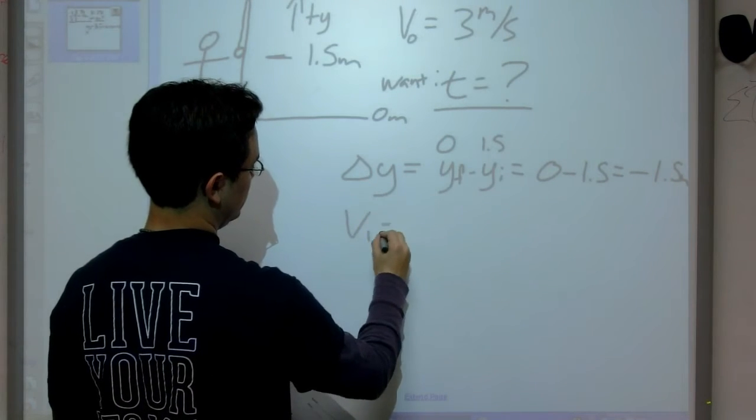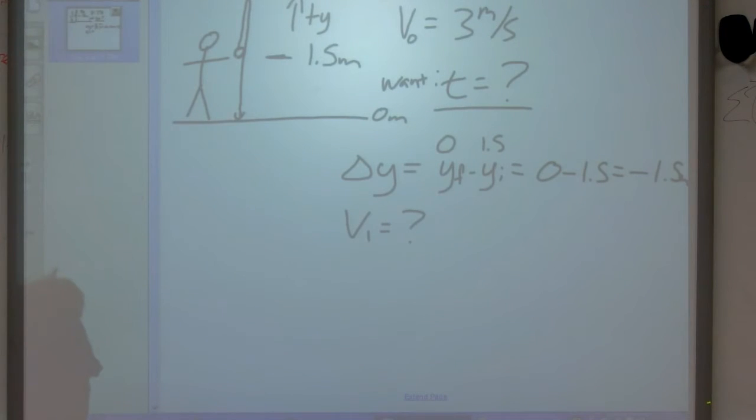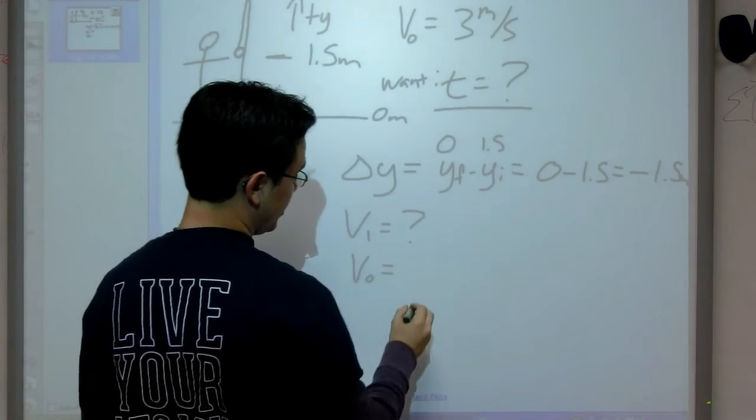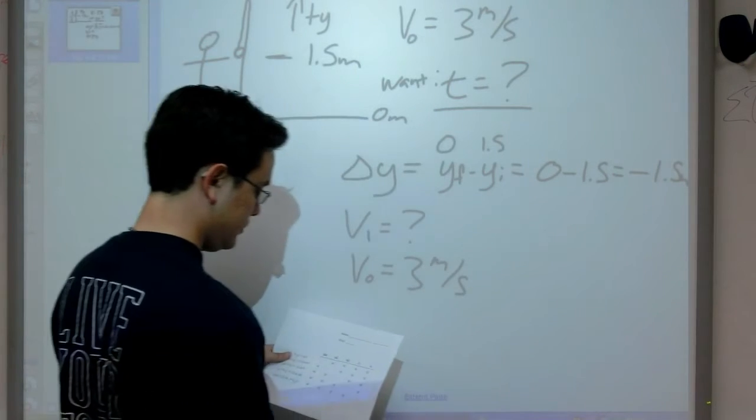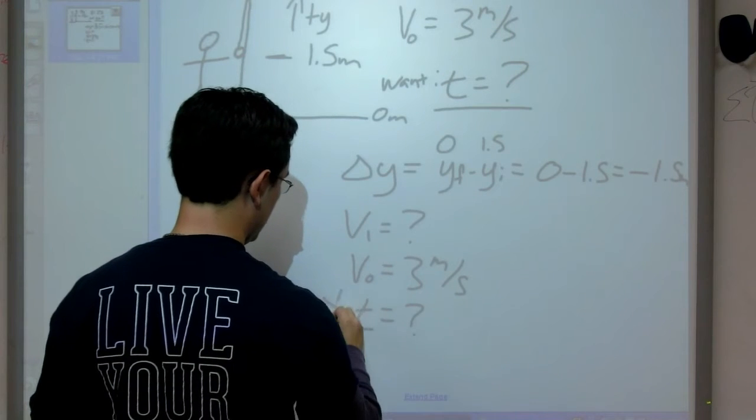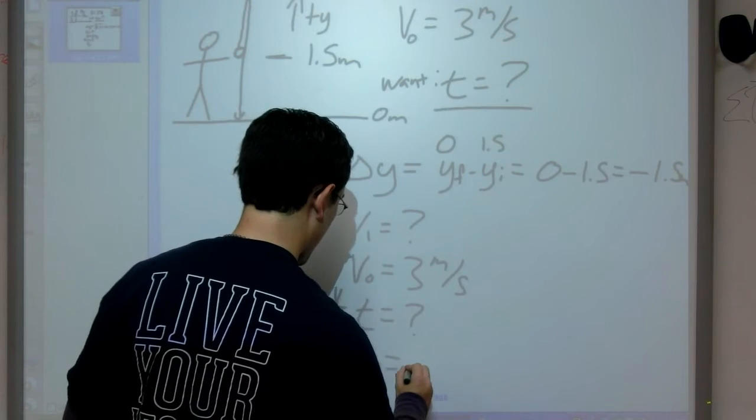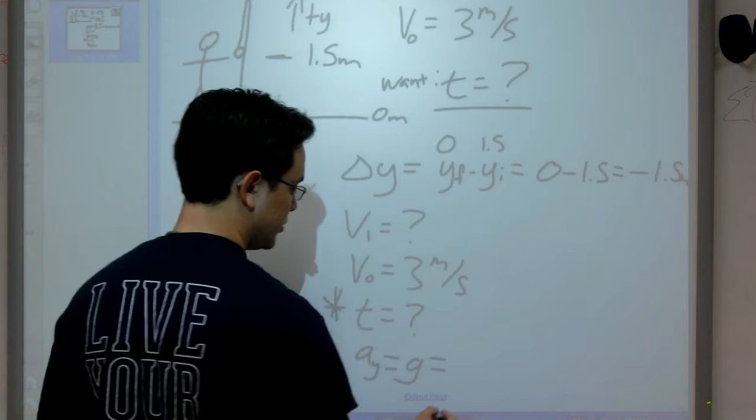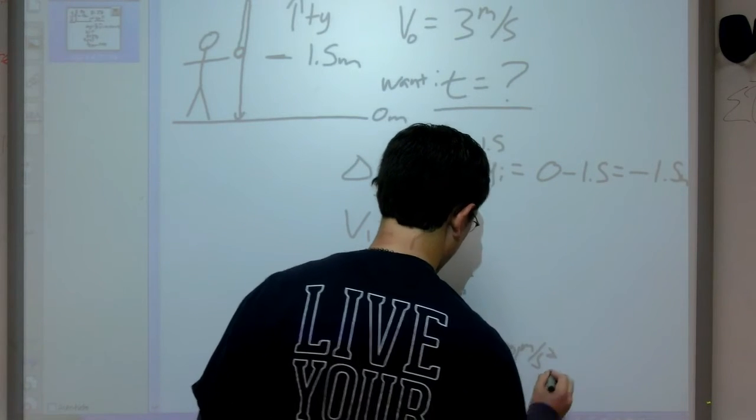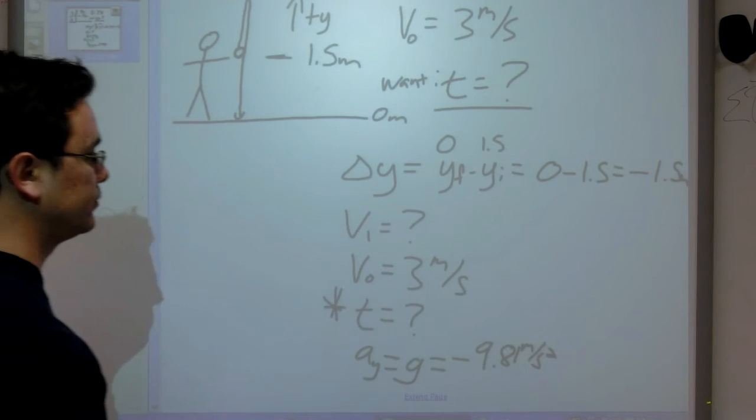Final velocity. We weren't told that. We might be able to find it, but for now, it's not what we're looking for. So let's skip over that. Initial velocity, that was something that we were given. That's 3 meters per second. Time is what we're looking for. We're going to put a star by that. And finally, acceleration. The acceleration in the y is little g, which we have seen many times before. It is negative 9.81 meters per second squared. It is negative because gravity accelerates things downward.